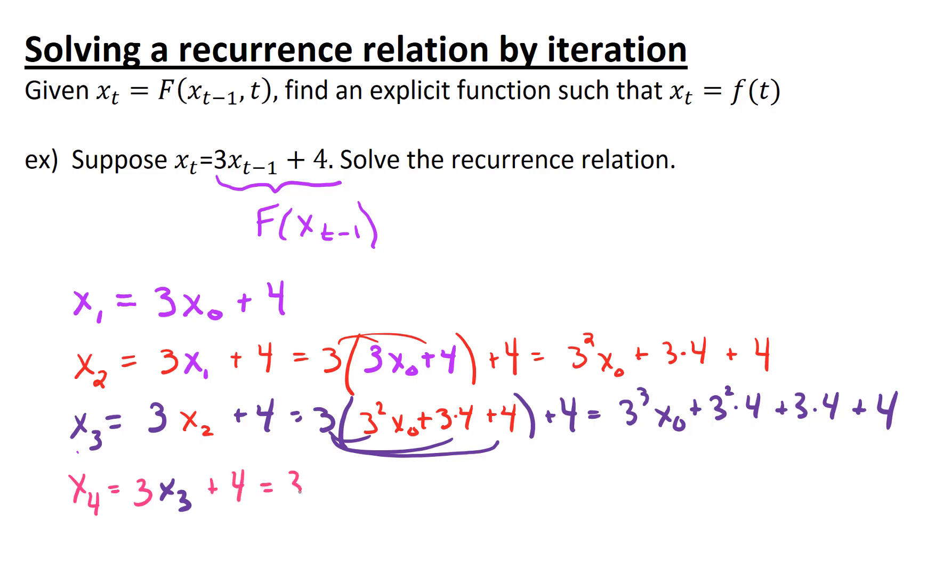So x sub 4 is 3 times x sub 3 plus 4. Working that out, we've got 3 times x sub 3. We know what that is. We just did that. That's 3 cubed x0 plus 3 squared times 4 plus 3 times 4 plus 4. It's getting very lengthy to write this, but I'll go on to the next line here. If we tidy this up, we have 3 to the 4th times x0 plus 3 cubed times 4 plus 3 squared times 4.